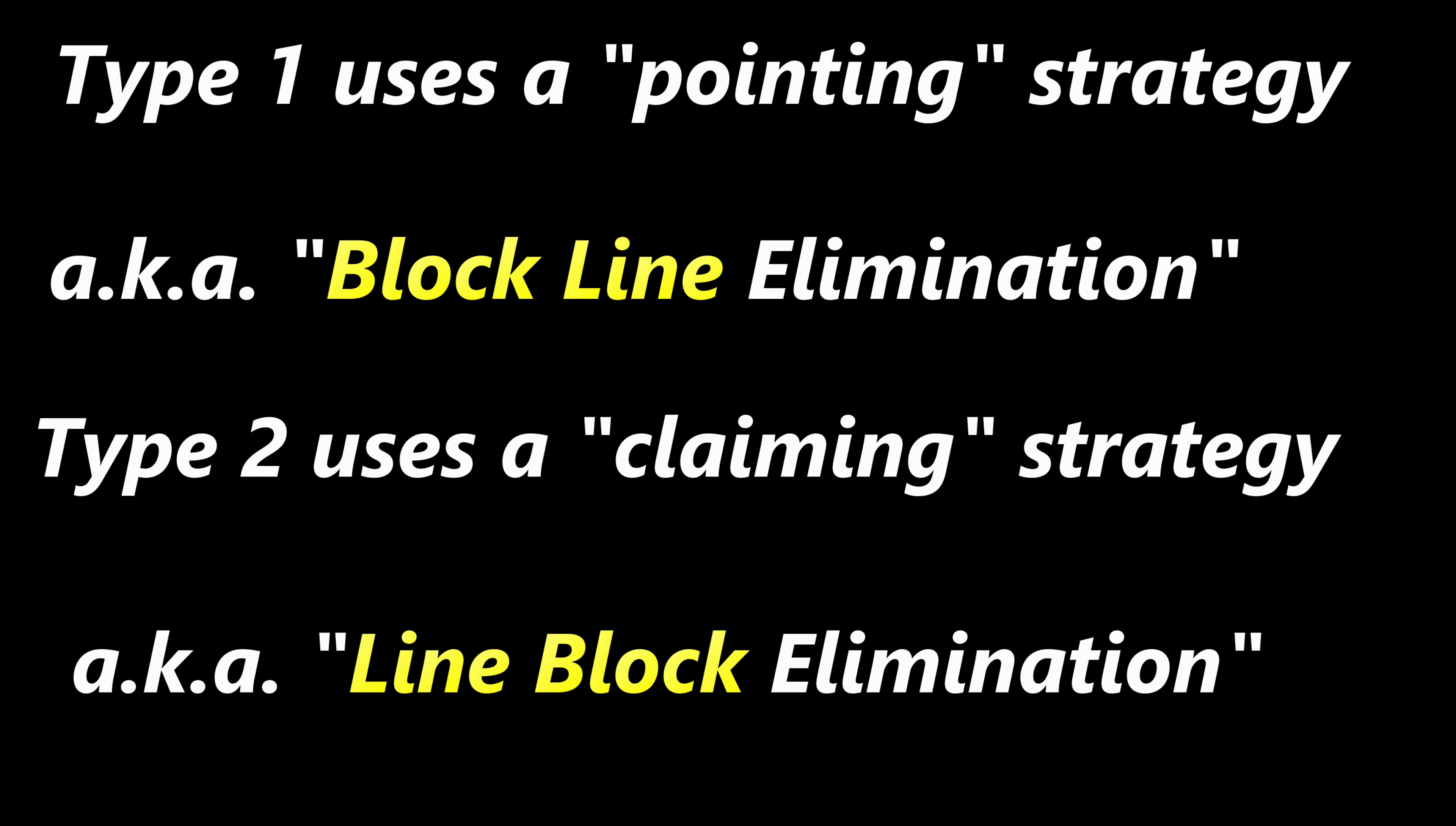Now let's take a look at type 2 locked candidates, sometimes called claiming or line block elimination. This is the converse of type 1 block line elimination. With type 2 locked candidates, we look at the line first and then eliminate the extra candidates in the same block.